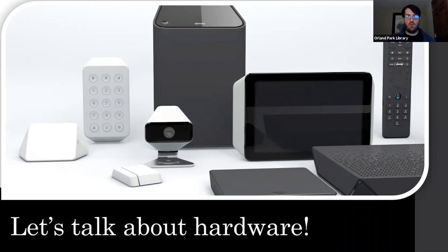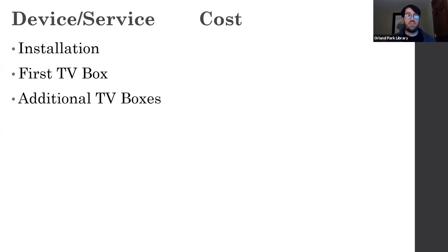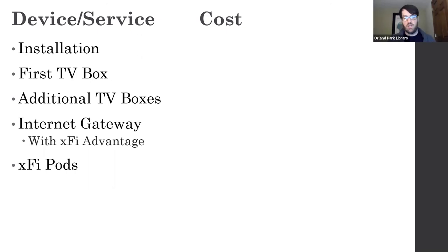Let's talk about all that hardware. With internet service providers, you have to get something installed and that installation comes at a cost. You also usually get your first TV box, but need additional TV boxes for each TV in the house. You'll need an internet gateway. With Comcast, they want you to get X-Fi Advantage — their security upgrade for the gateway — and X-Fi Pods, like a mesh network that works with your gateway to spread your signal. All of these things cost money and are usually rentals or upfront fees.